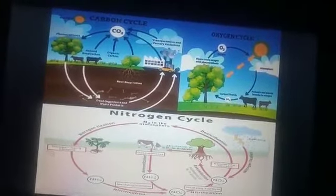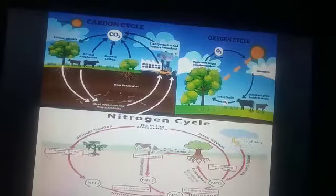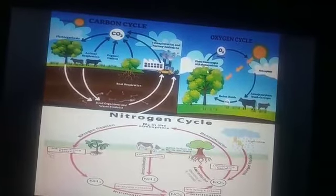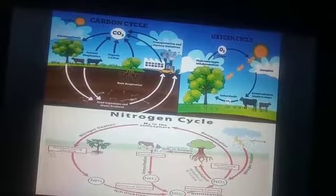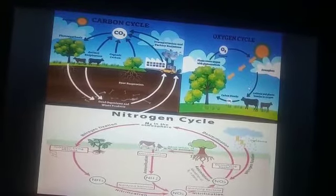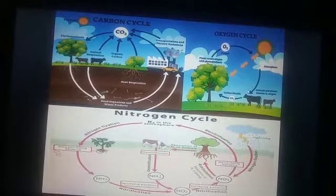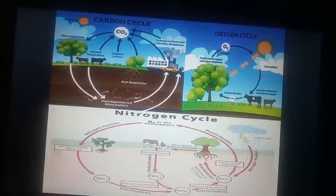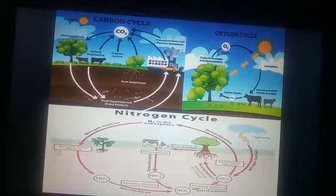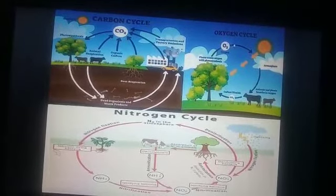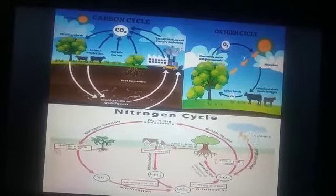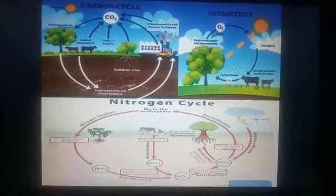Now we shall discuss this diagram. Please follow the arrow. The source of oxygen is the plant, which through the process of photosynthesis gives oxygen to the atmosphere. From the atmosphere, it is taken in by animals in the form of breathing, and animals give carbon dioxide back to the plant. From this carbon dioxide, through the process of photosynthesis, oxygen returns to the atmosphere. This is the cyclic manner of the oxygen cycle.